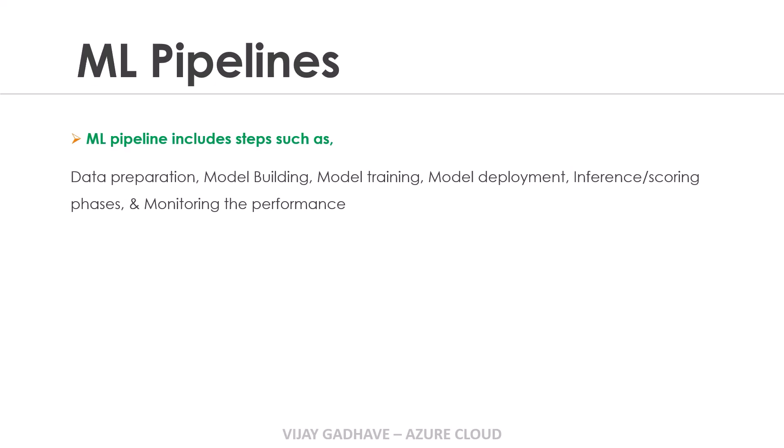The machine learning pipeline includes steps such as data preparation, model building, model training, model deployment, inference and scoring phases, and monitoring the performance.